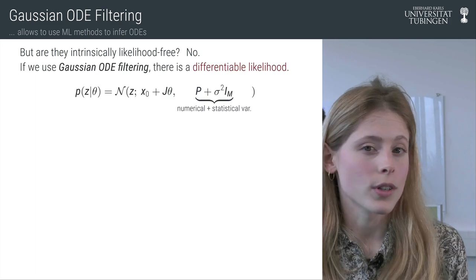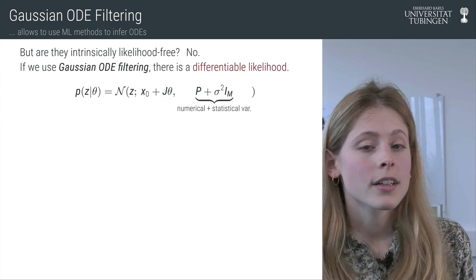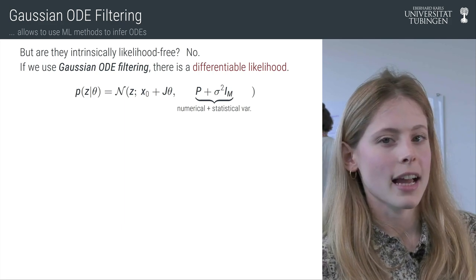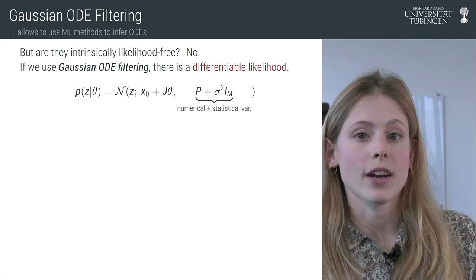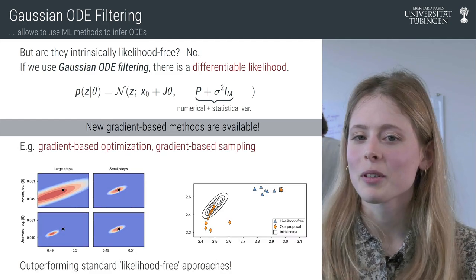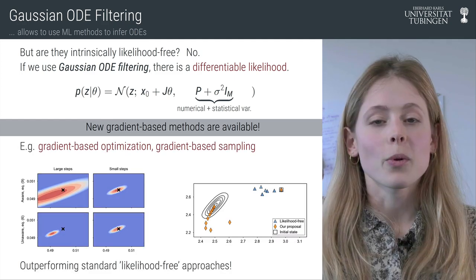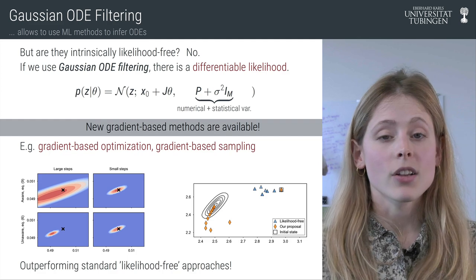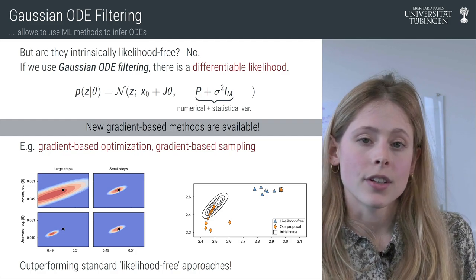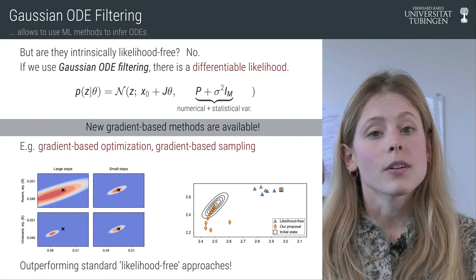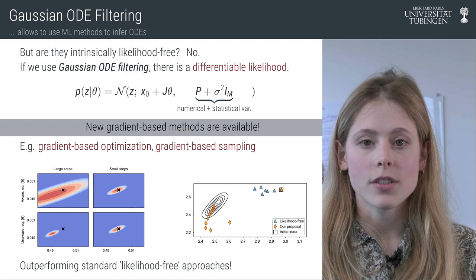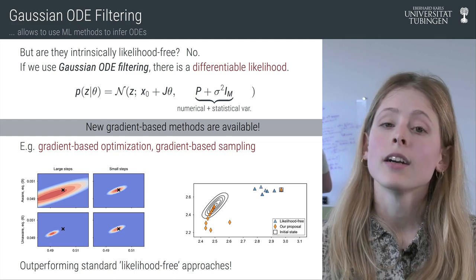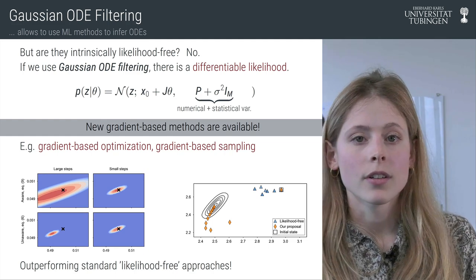If we use Gaussian ODE solvers, then we can construct a local Gaussian approximation of the likelihood and compute its gradient. On the left side you can see a plot showing the uncertainty-aware version of the likelihood, and on the second row the unaware version. The true parameter, the black cross, lies in the region of high probability only in the aware version.